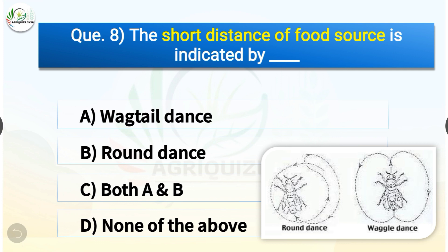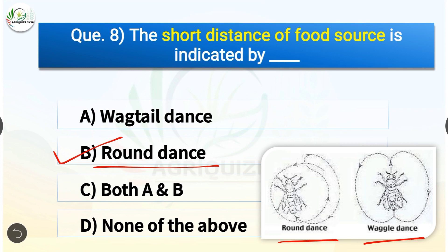Question number eight: The short distance of food source is indicated by which dance? The options are: waggle dance, round dance, both A and B, or none of the above. The correct answer is option B — round dance. Short distance food source is indicated by round dance, whereas long distance food is indicated by waggle dance. Round dance is performed when food is less than 50 meters away; waggle dance is performed when food sources are over 150 meters away.